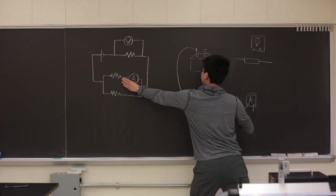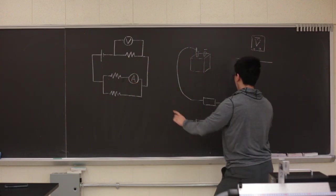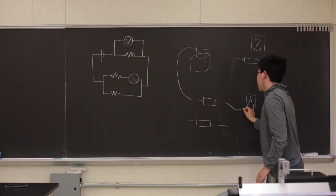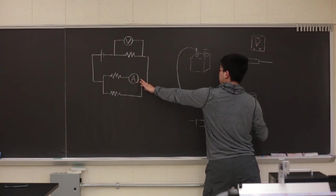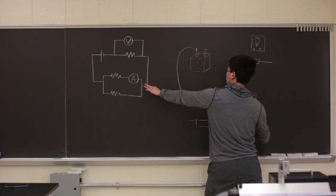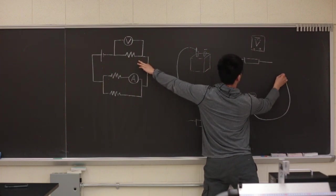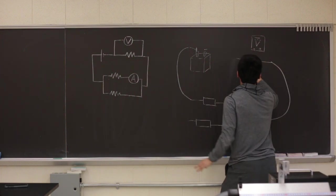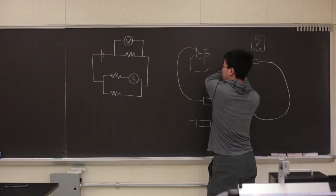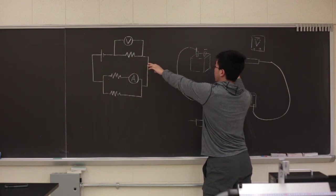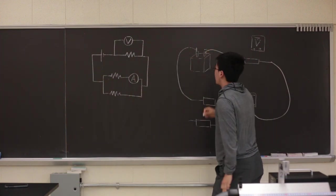And this resistor connects to one side of the ammeter. And one side of the ammeter connects back to the resistor. And this side of the resistor goes back to the negative side.